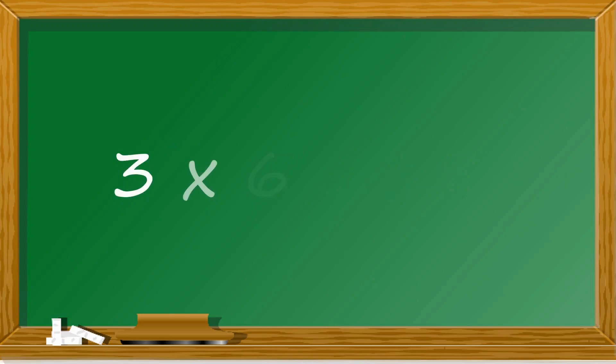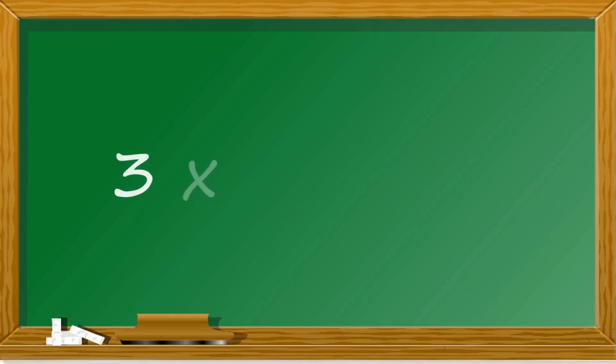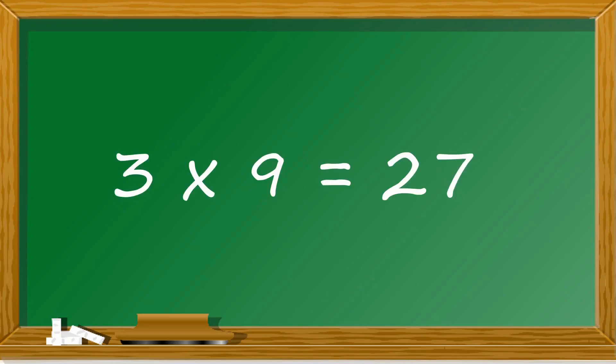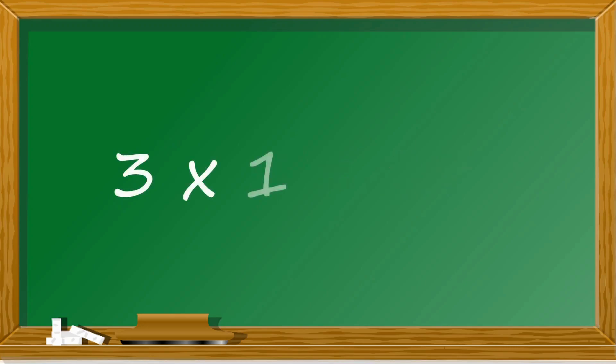3 6s are 18, 3 7s are 21, 3 8s are 24, 3 9s are 27, 3 10s are 30.